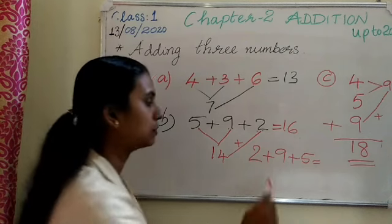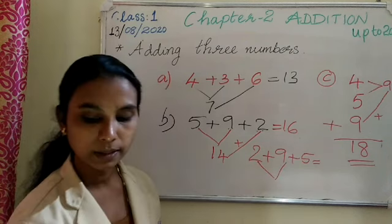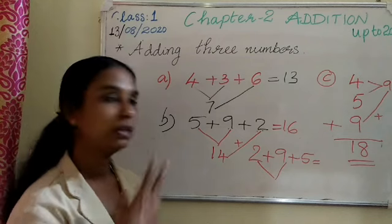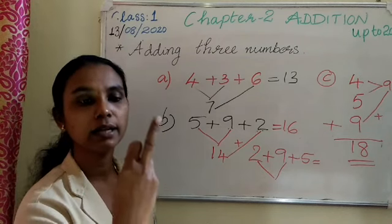Even you change the order, the sum is same. Just you see. 2 plus 9. What is 2 plus 9? 9 in your mind, 2 finger. After 9, 10, 11.